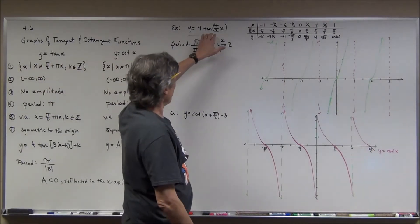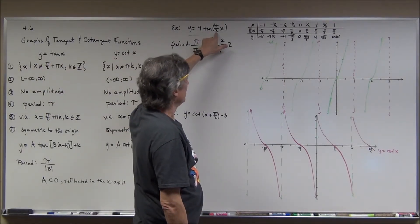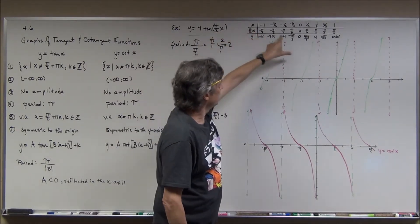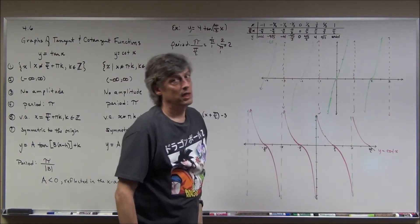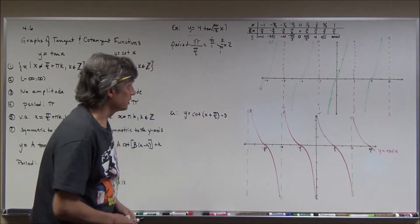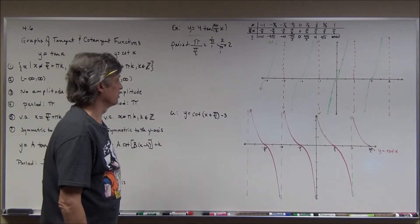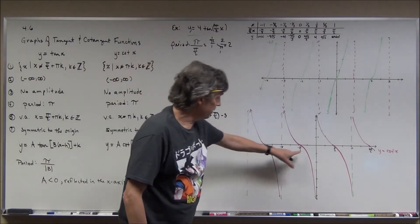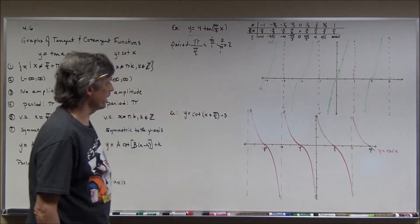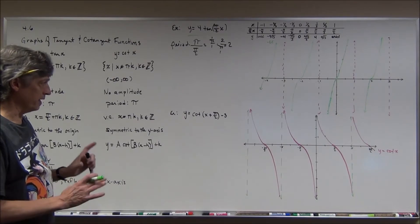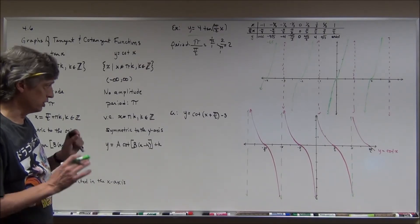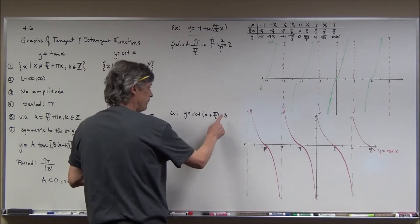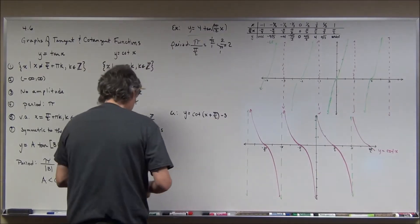Again, when you have a change in period due to b, pick x-values that when multiplied by b give you the nice unit circle values you know the sines and cosines for — and from those you can find tangents, cotangents, secants, and cosecants. For the second example, I've put the parent graph y = cot(x) in pink because the basic shape won't change — this is a rigid transformation: π/2 to the left and 3 down.